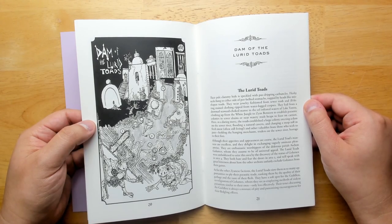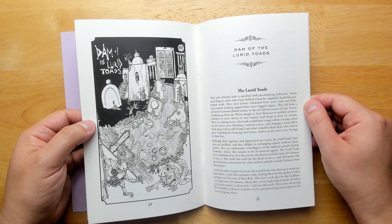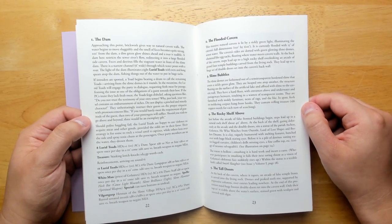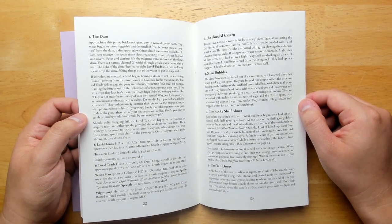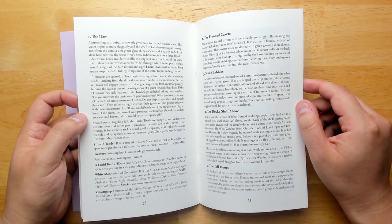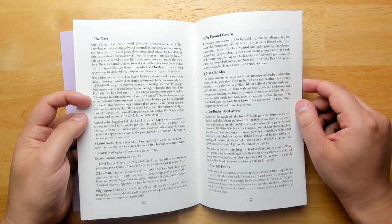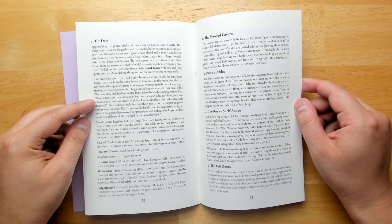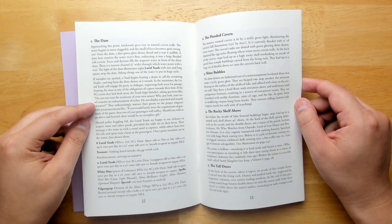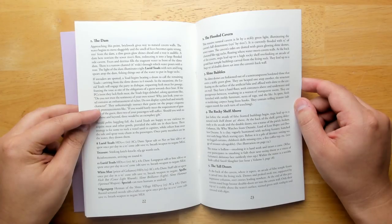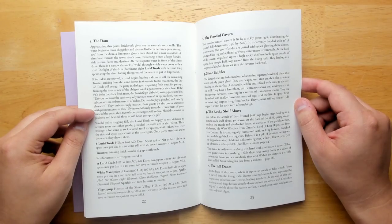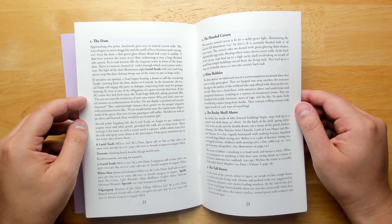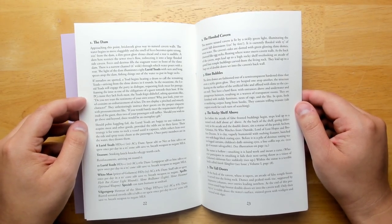We have the dam of the lurid toads. So this is another point crawl along the sewer where these weird toads have dammed it up and are demanding payment. And what they want is food and they see basically anything living as food. They have this very ornate formal way of talking to you. For example, if you insist that you don't have any fresh meat on board, the toads feign disbelief, asking questions like, do you not trust the testimony of your own senses? Why just look, your vessel contains an embarrassment of riches. Should you wish to go above and beyond three would be an exemplary gift. So who are you going to sacrifice?